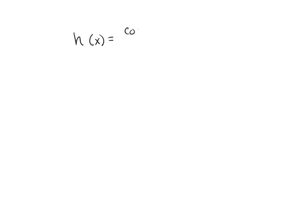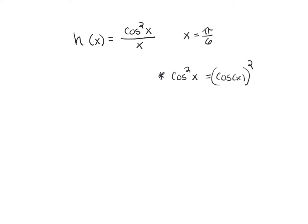Our last example: h of x equals cosine squared x over x, and we're going to evaluate this at π over 6. What we have here is both a chain rule and a quotient rule at the same time — the quotient rule because of the division. Looking at cosine squared x, we can rewrite that as (cosine x) squared. Taking just the derivative of that part using the chain rule, we bring down the 2 to get 2 cosine x.